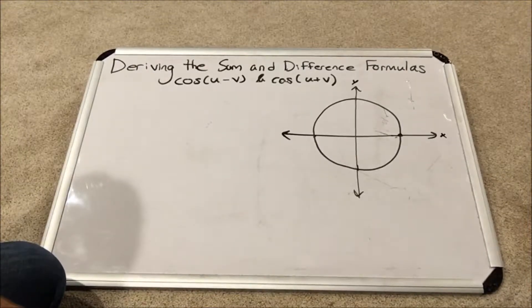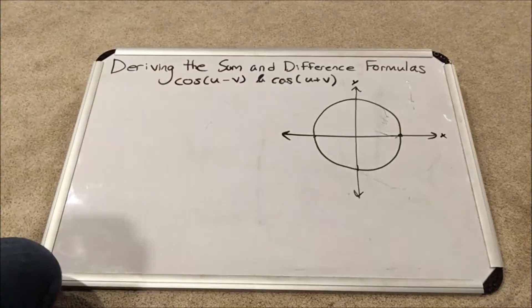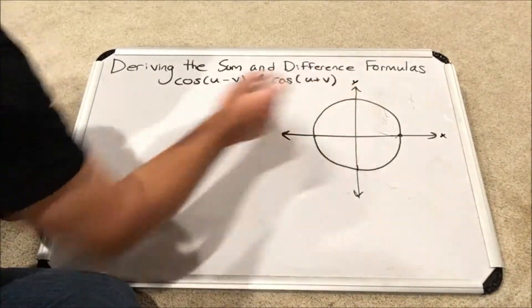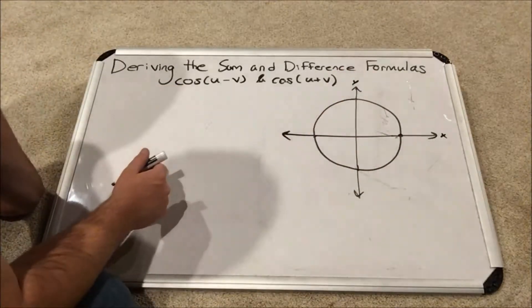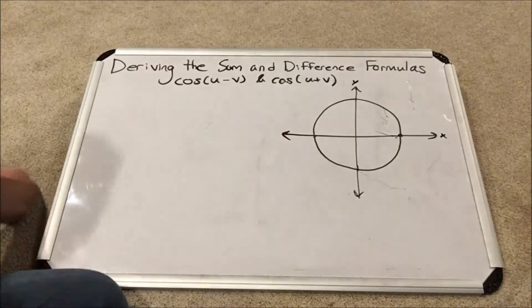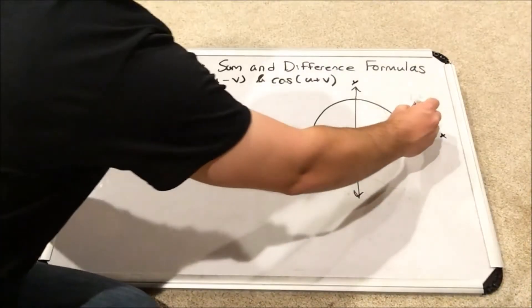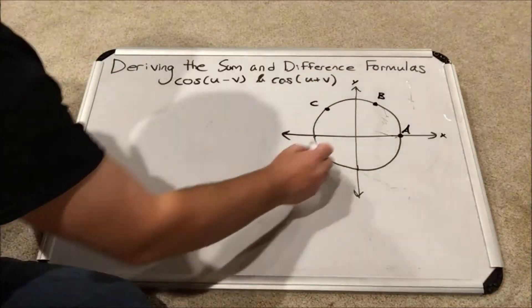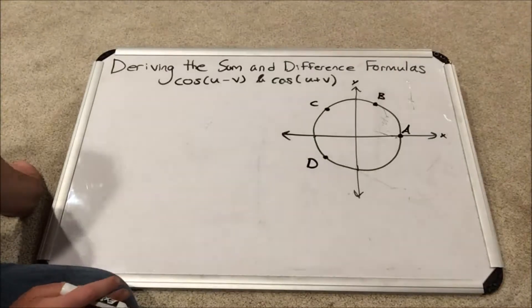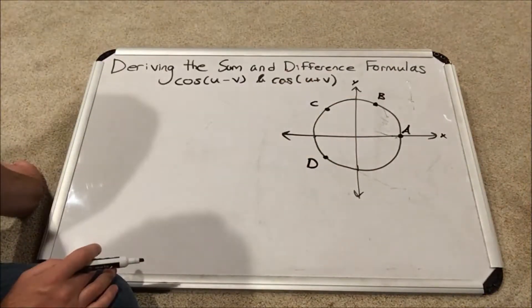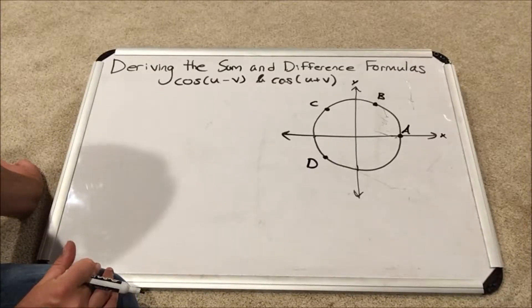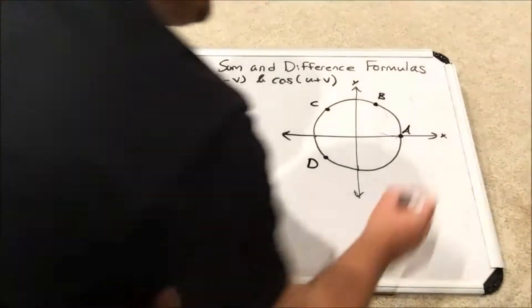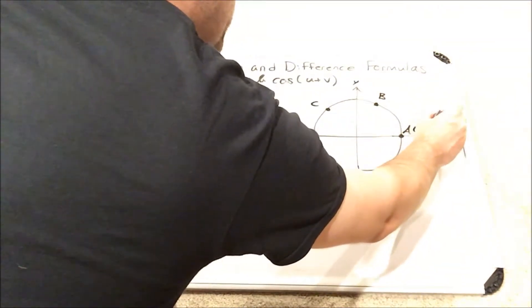In order to set up the proof of cosine u minus v, I'm going to use the unit circle. The unit circle is the basis for trigonometry in general. The unit circle is a circle of radius one centered at the origin of the Cartesian coordinate plane. We are going to define four points on the unit circle. A will be here, at the positive x-axis. Its coordinates are 1 comma 0.